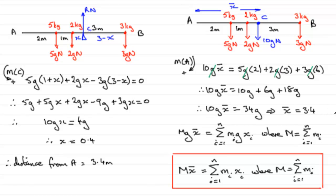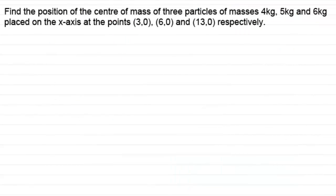Now I've got another example that demonstrates this using this formula, rather than going to these kind of lengths. You might like to try it. What we've got then is to find the position of the centre of mass of three particles, of masses 4kg, 5kg and 6kg, placed on the x-axis at the points 3, 0, 6, 0 and 13, 0 respectively. So, you might like to have a go at that. Just pause the video, come back when ready, and I'll run through the solution.